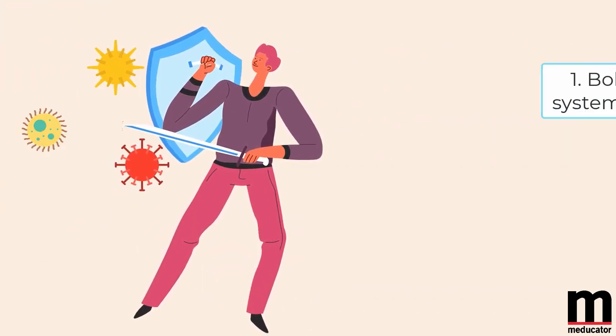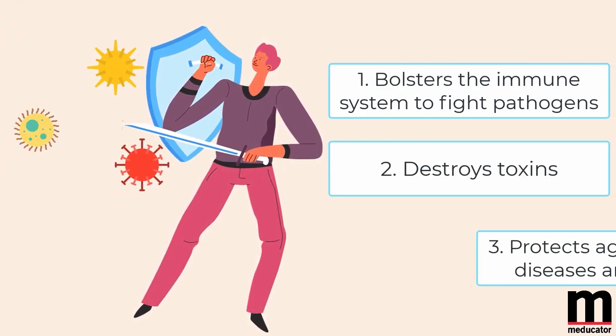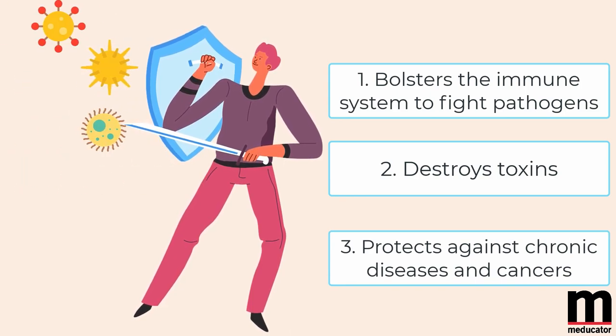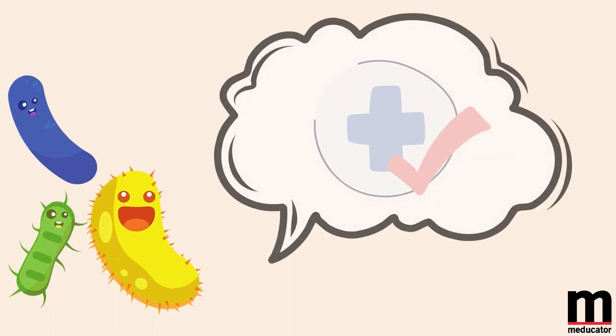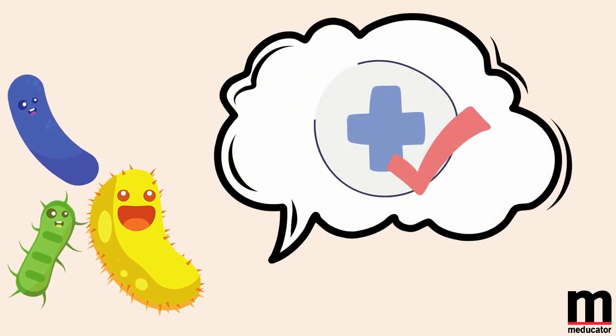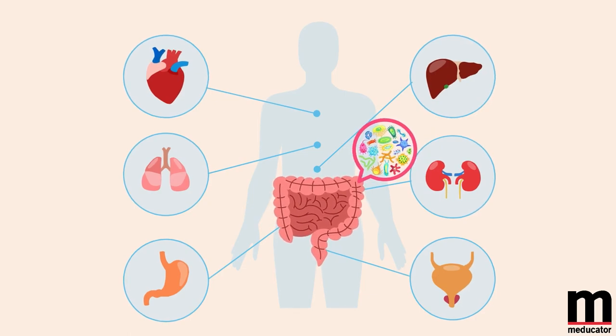From bolstering your immune system to fight off pathogens, destroying toxins, and even protecting you against chronic diseases and cancers, for organisms so small they sure have big responsibilities. The gut microbiota is so important that scientists are even considering it to be its own organ.